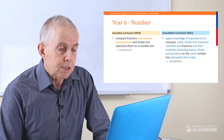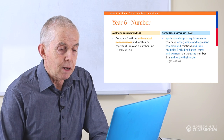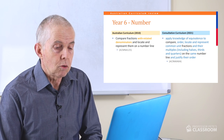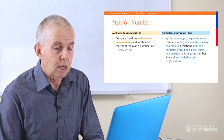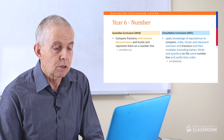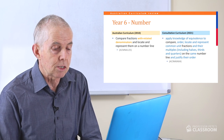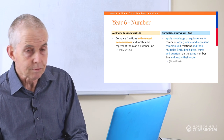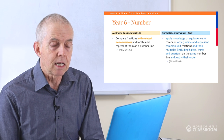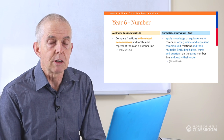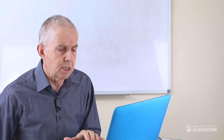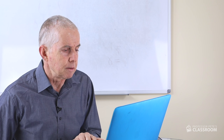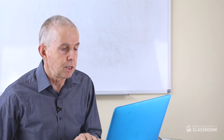The fourth content descriptor states: apply knowledge of equivalence to compare, order, locate and represent common unit fractions and their multiples — including halves, thirds and quarters — on the same number line and justify their order. It's about understanding fractions, locating them on a number line, having an idea of how large fractions are. I like this content descriptor; there's lots of detail and I think teachers will find it useful.